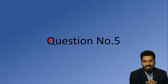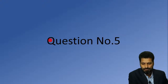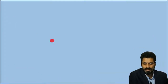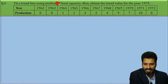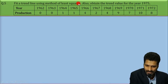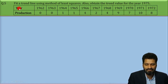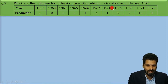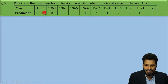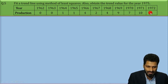Hello dear students, welcome back. Let's begin with the new question. The question says: fit a trend line using the method of least squares. Also obtain the trend value for the year 1975. We are given years and corresponding productions. Years are 1962, 1963, all the way up to 1972, and corresponding production values are 0, 0, 1, 1, 4, 2, 4, 9, 7, 10, and 8.